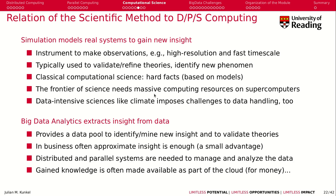Let's see how they fit into the scientific method. Simulation models can give you insight. The difference between a simulation and real physics is that in a simulation you can get very high resolution and very fast timescales — you can look at nanoseconds of real time, which is really difficult to achieve with a real-world experiment. Those simulation models can be used to validate or refine theories and identify new phenomena. In classical computational science, we talk about hard facts based on physical models, but big data analytics adds another facet.